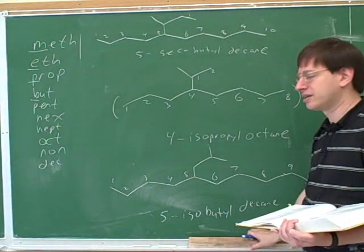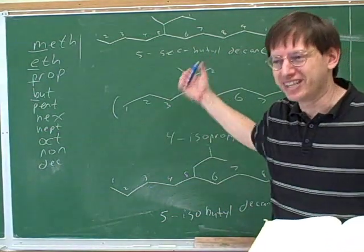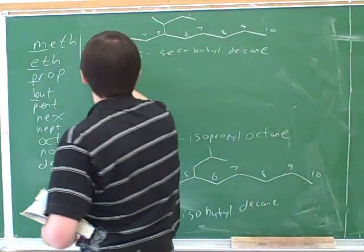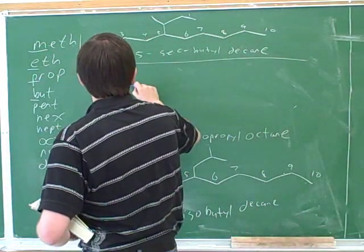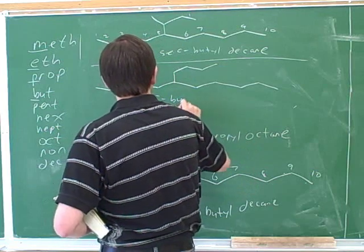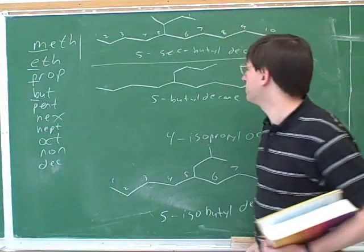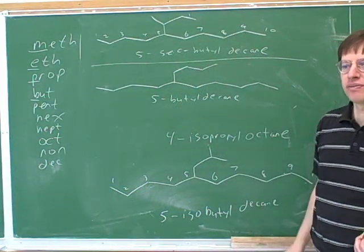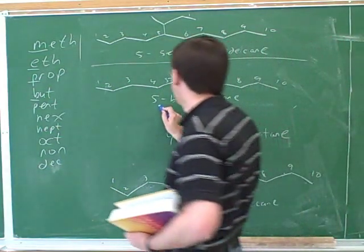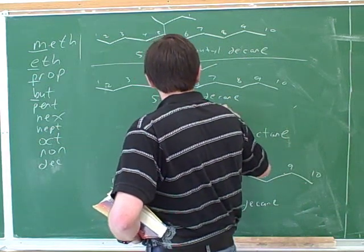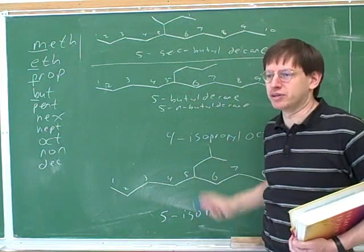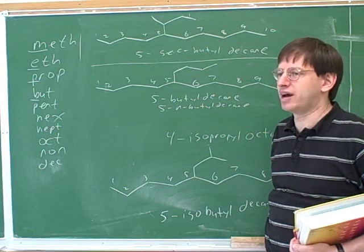A student asks about n-butyl. That's just normal butyl — n-butyl is when it's not branched, so normally people don't even bother saying that. Sometimes an instructor will use that term. So this compound would just be five butyl decane — we already knew how to name this. It could also be called five n-butyl decane, but people wouldn't usually use this name. They might say 'n-butyl substituent' to distinguish it from a sec-butyl or isobutyl substituent. Sometimes when someone really wants to emphasize that the substituent is not branched, they say n-butyl.